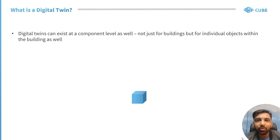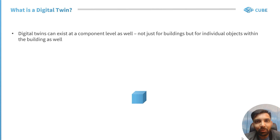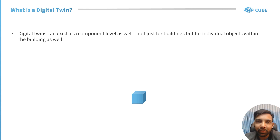These Digital Twins may not necessarily exist at a building level — they may exist at a component level as well. And it may not just be for buildings, but anything within the building, or may not necessarily be related to any vertical piece of infrastructure. It could be a horizontal infrastructure like a road, highway, tunnel, etc.